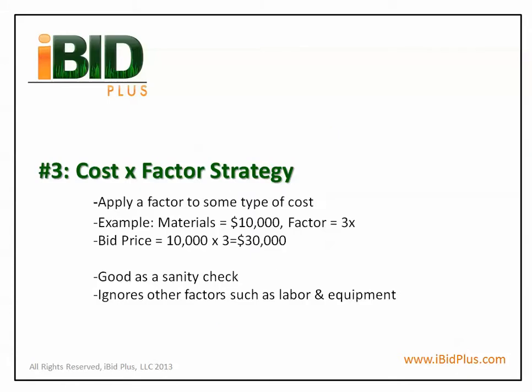The third strategy is cost times a factor. This is when a company applies a multiple to some type of cost. For example, they may take materials and use a factor of three, so the bid price is $10,000 multiplied by three, making the job $30,000. Some business owners use this methodology because they believe that materials make up roughly a third of the project, labor covers a third of the project, and all other costs, profit and overhead make up the other third.